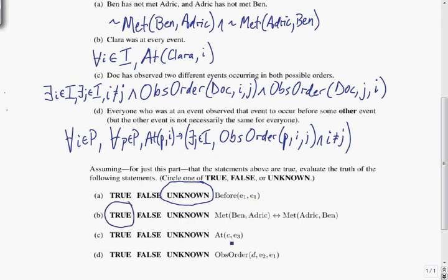Now we have At(CE3). Oh, typo, that should be Clara. Sorry everyone. And that should be Doc. Okay, so At(Clara, E3), was Clara at event 3. Clara was at every event, so we do know that Clara was at event 3.